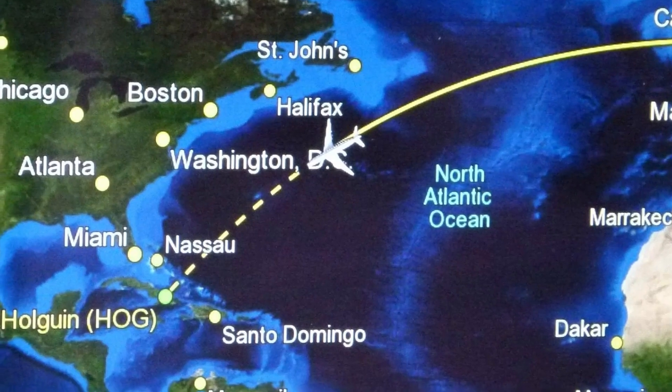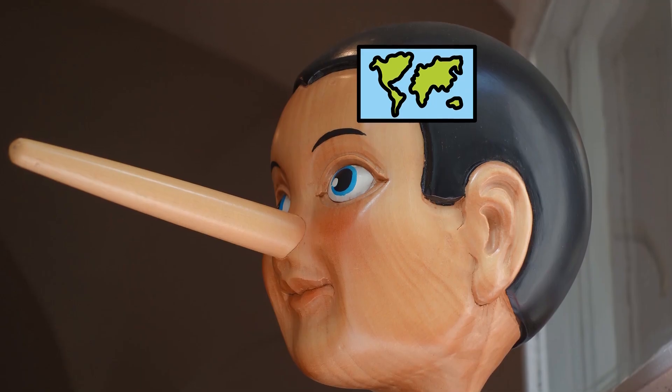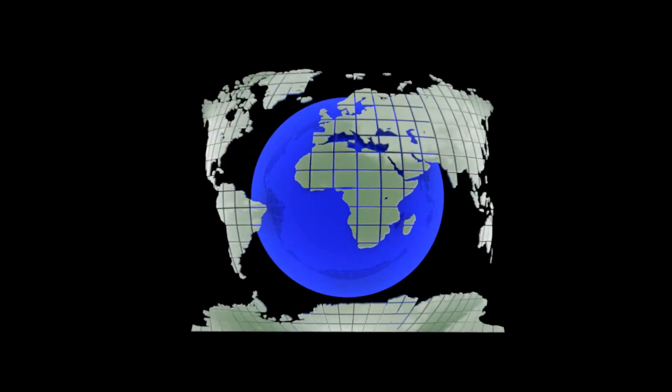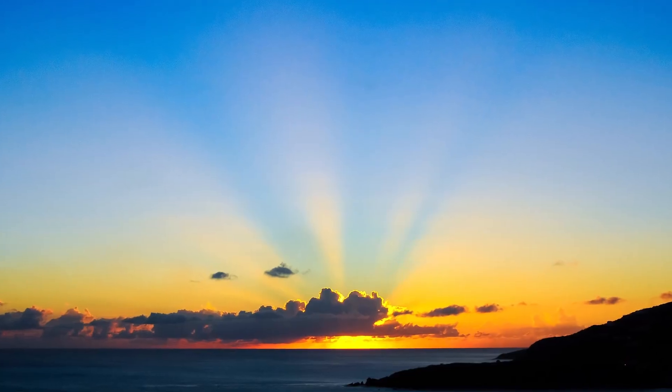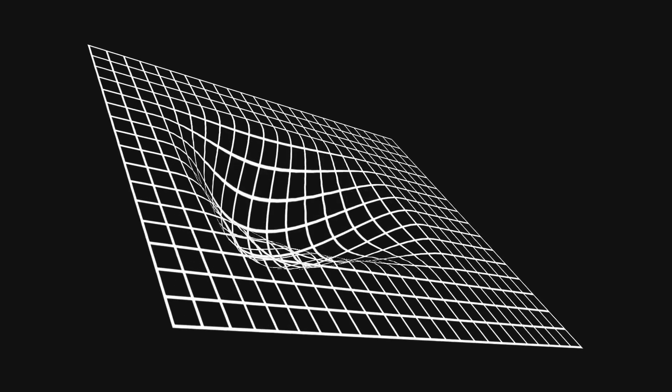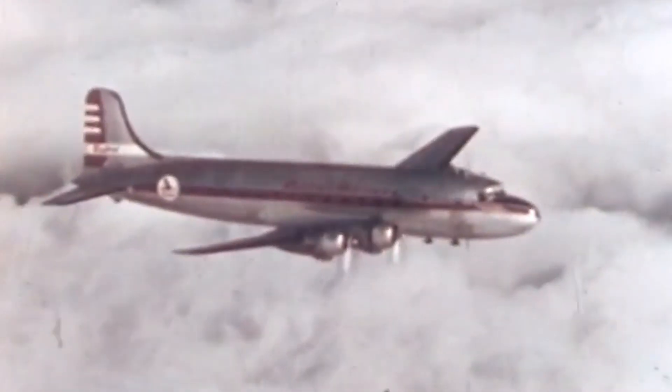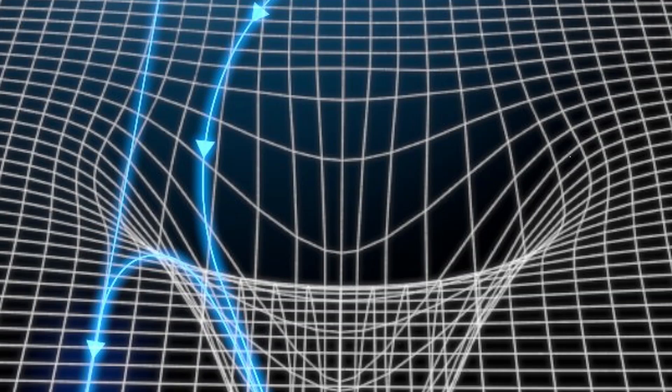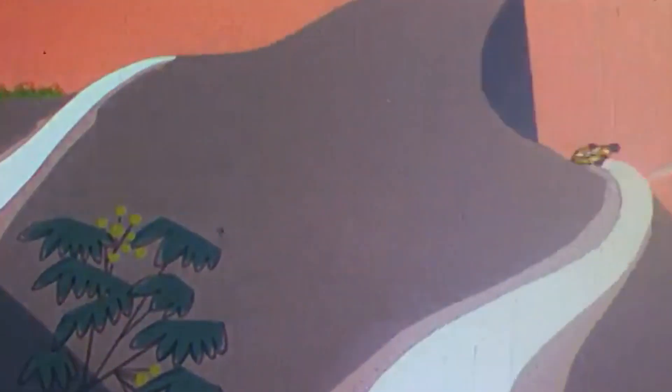When the path looks curved on a flat map, that's just the map lying to you. In reality, that arc is Earth's version of a straight line. Similarly, light's path bends not because it wants to, but because space-time itself is curved. It's just taking the cosmic equivalent of the most direct flight route, even if that means following what looks to us like a curve.